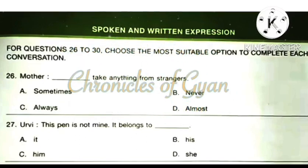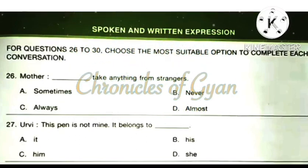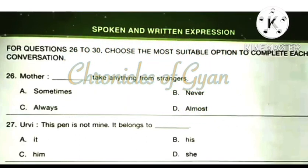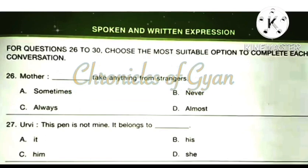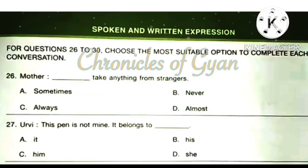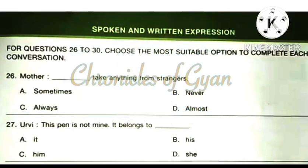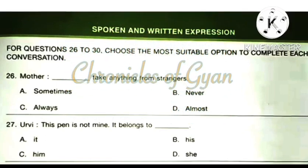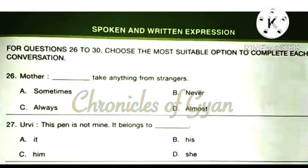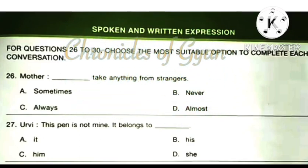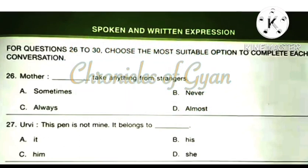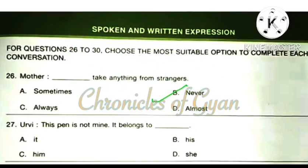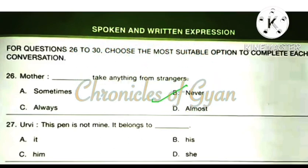For questions 26 to 30, choose the most suitable option to complete each conversation. Question 26 — Mother: Dash take anything from strangers. The correct answer is option B: Never. Never take anything from strangers.